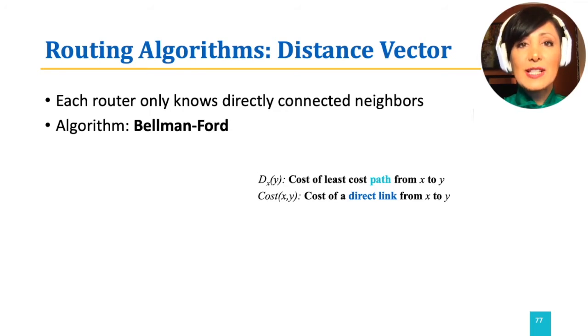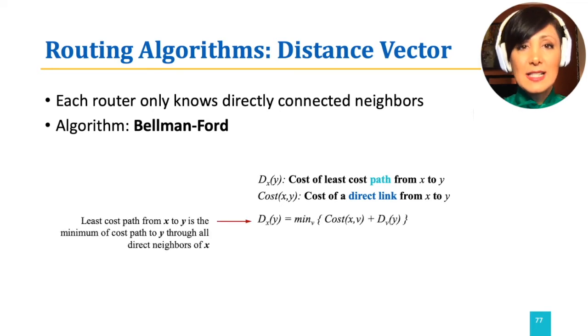Given these notations, the Bellman-Ford equation says dx(y), the element y of the distance vector, is the minimum over all neighbors v of x, the cost of link from x to v, plus the cost of path from that neighbor v to y. We compute this value for each of the neighbors on each update iteration and propagate the distance vector to all of its neighbors.